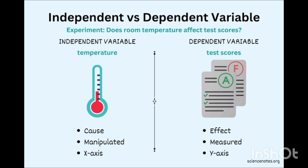Another example: the experiment is 'Does room temperature affect your test score?' The independent variable is temperature and the dependent variable is your result. It is very commonly experienced — if there is a very heated environment you will be sweating more and performing less, but if you are in an air-conditioned room you are relaxed and can score more.